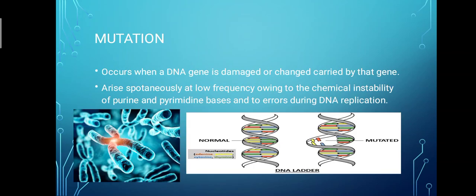Mutation occurs when a DNA gene is damaged or changed carried by that gene. Arise spontaneously at low frequency owing to the chemical instability of purine and pyrimidine bases and to errors during DNA replication.